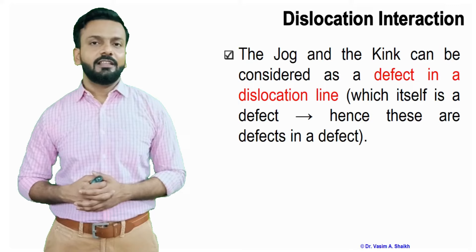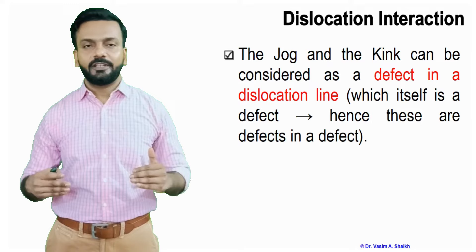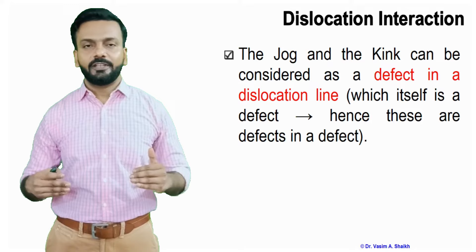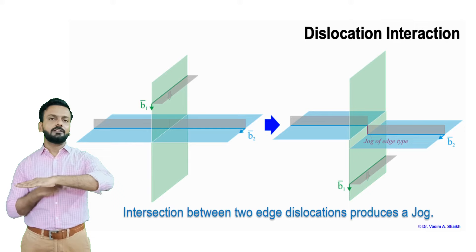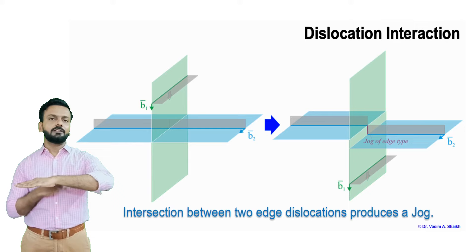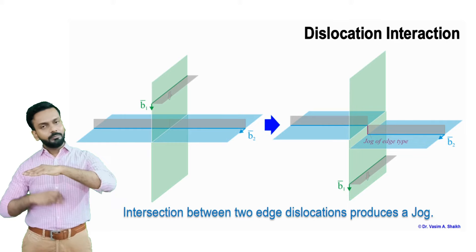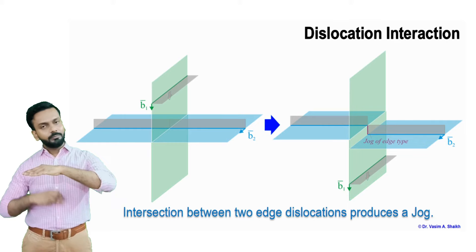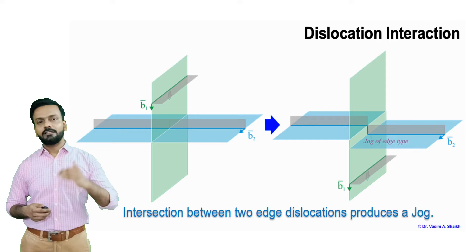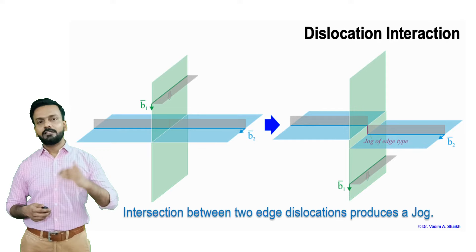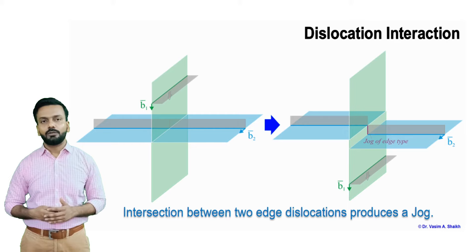Jog and kink can be considered defects in the dislocation line — we can call them defects in defects. As shown in this image, a dislocation line is present in a plane, then a dislocation comes from the top interacting with it, and finally takes it out of that particular slip plane to a parallel slip plane. On the left-hand side of the image, the dislocation line is on the upper plane; as it leaves, it creates a jog — a separate dislocation on a separate but parallel slip plane.